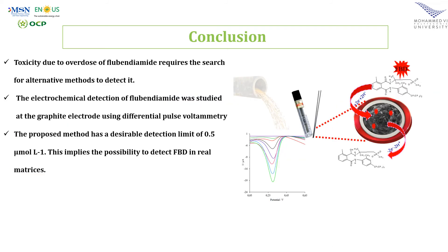In conclusion, the toxicity of flubendiamide in the case of overdose requires the search for alternative detection methods. In this work, we developed an electrochemical method for the detection of flubendiamide on the surface of the graphite carbon electrode using differential pulse voltammetry, with a detection limit on the order of 5.3×10⁻⁶ mol per liter. This implies the possibility to detect flubendiamide in real samples. Thank you.